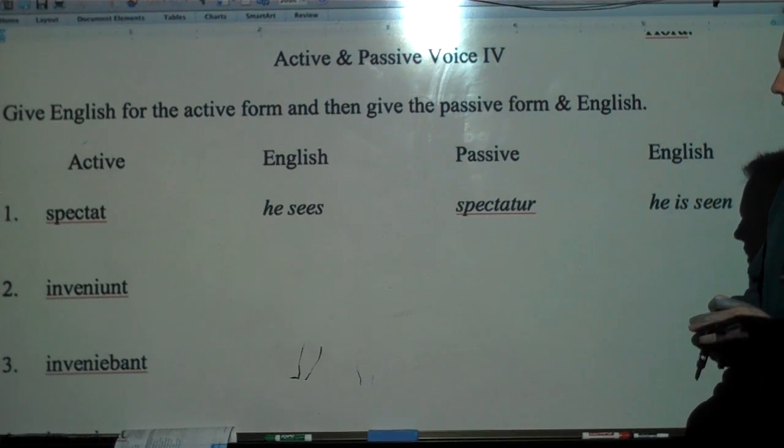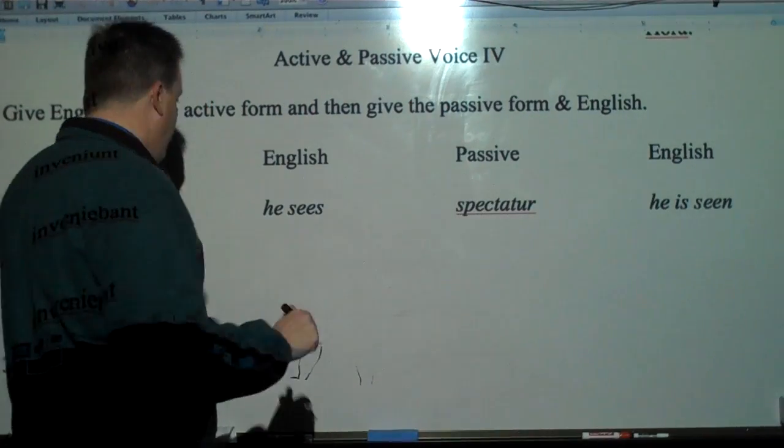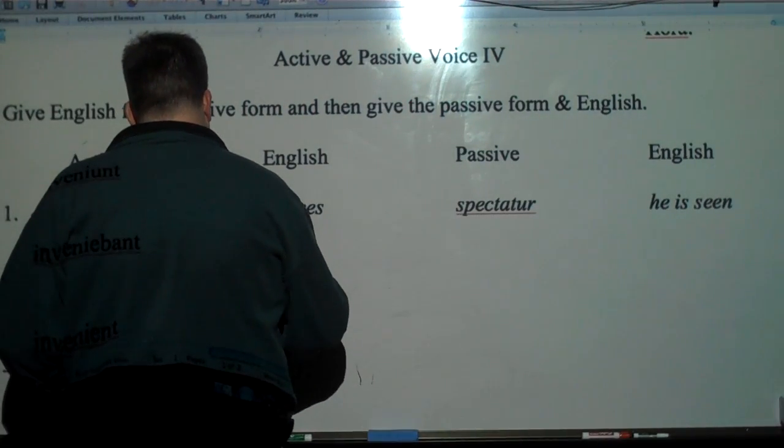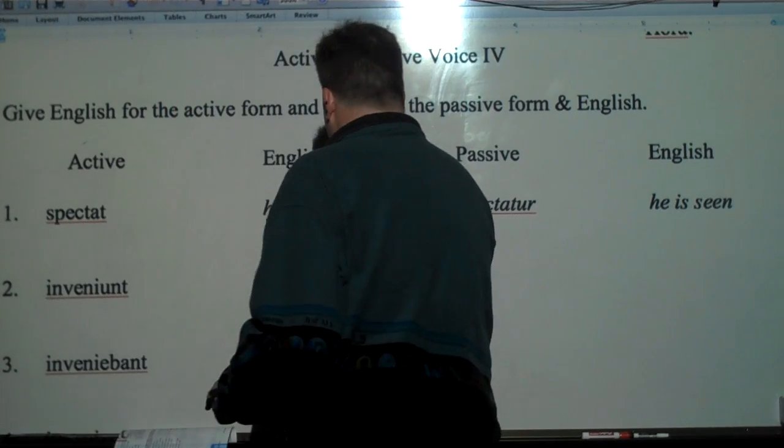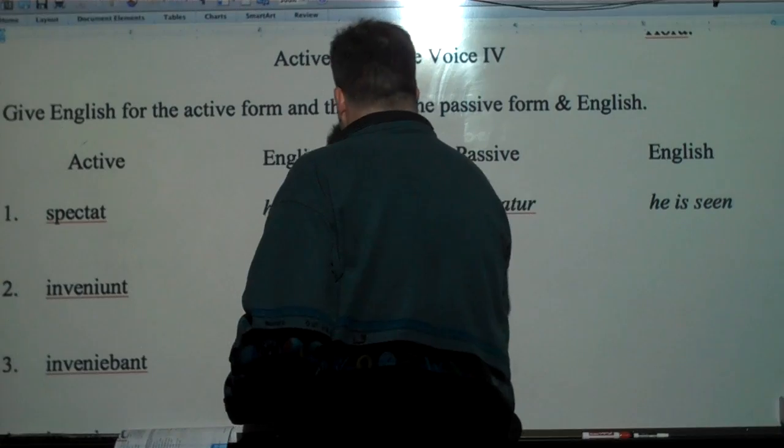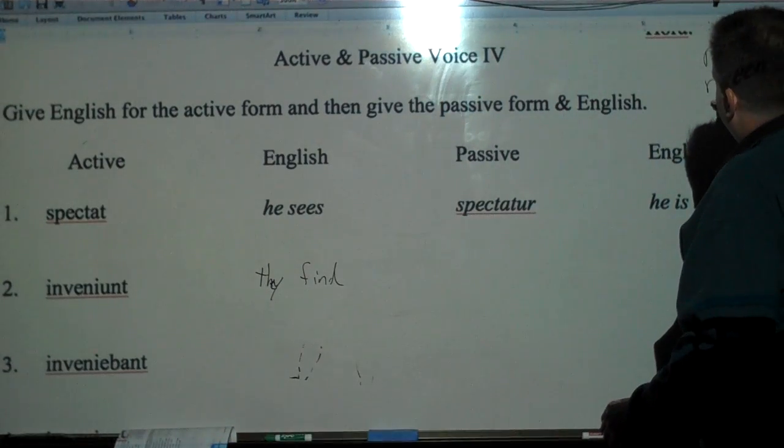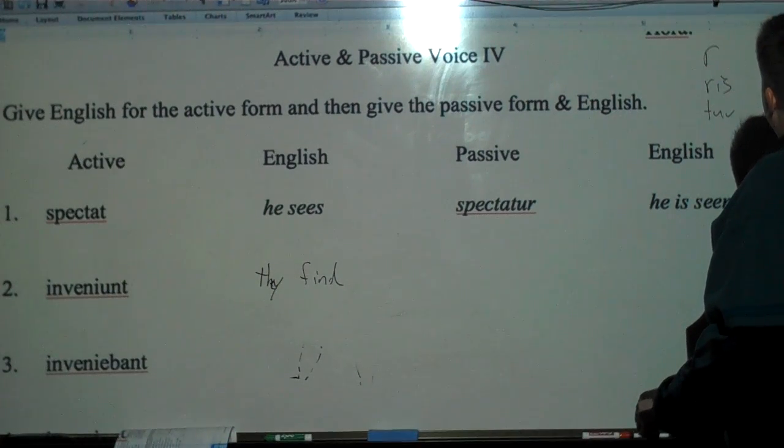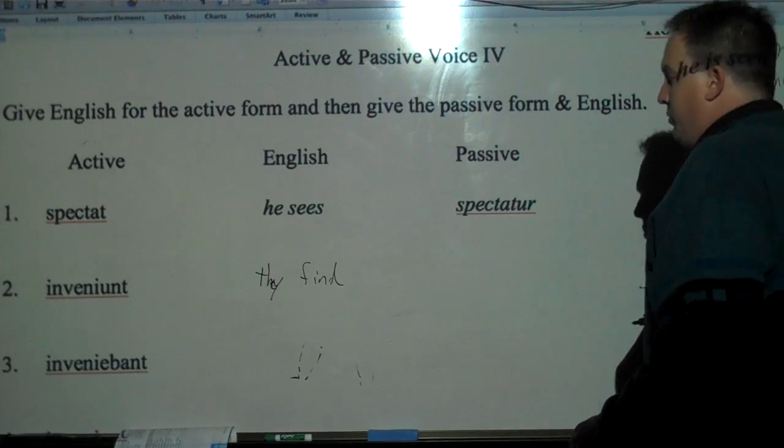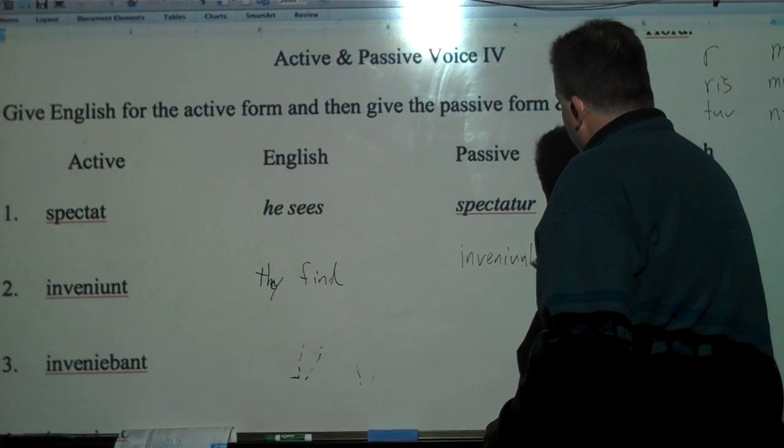So let's follow along and see what we've got. So invenio. What we're doing here is we're putting it to English. Now invenio is what conjugation? It's fourth. So that would be ends and enti. So it would be they find. Now to make it passive, we just put the passive endings. Remember the passive endings are ris, tur, mor, mini, entur. So we just go inveniuntur.